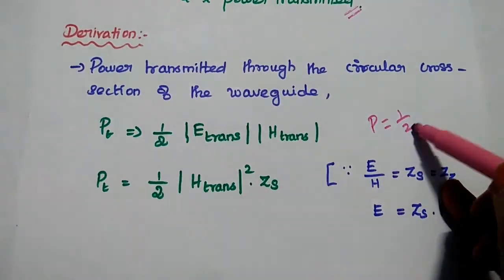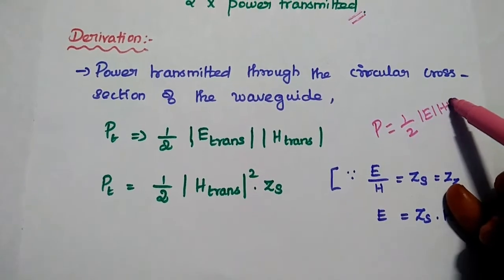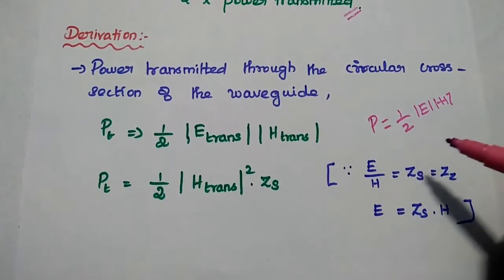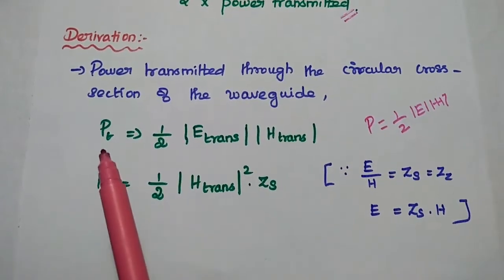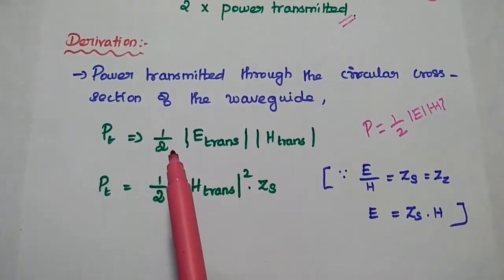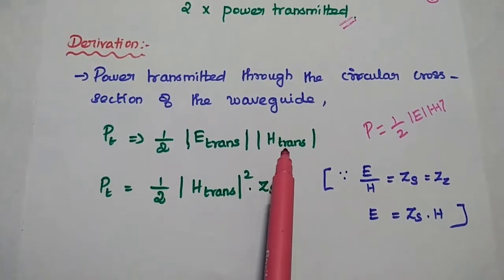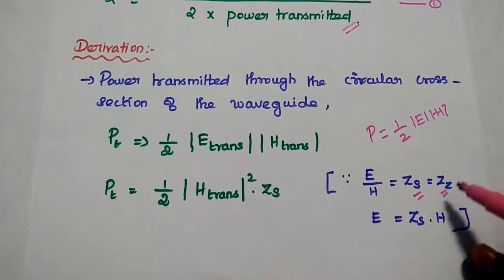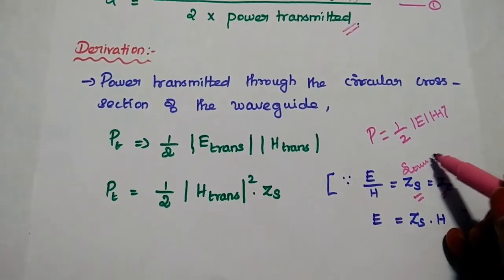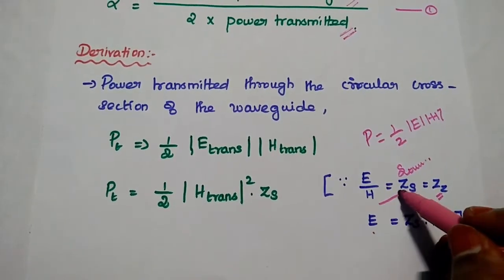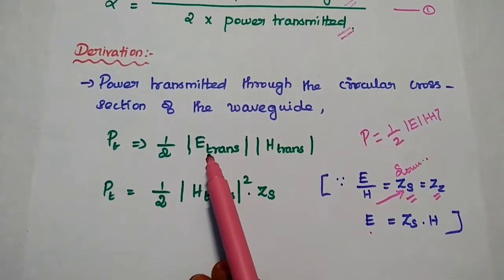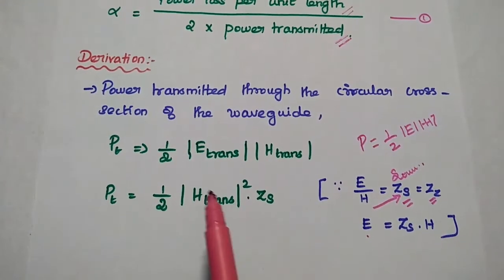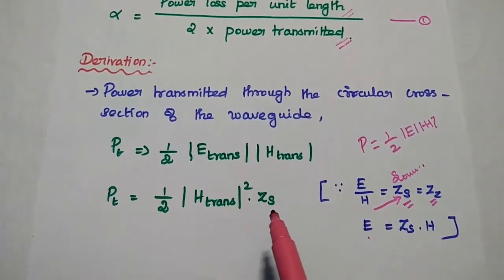The Poynting vector is equal to 1/2 into E into H. Here in this circular waveguide, we are going to consider axial components of electric and magnetic fields. The power transmitted is equal to 1/2 modulus of the transmitted electric field and transmitted magnetic field. As we know the relation between E and H, we can get the values ZS and ZZ — that is source impedance and wave impedance. From this, E equals ZS into H. Replacing E with ZS into H, we get 1/2 modulus of transmitted magnetic field squared into ZS.